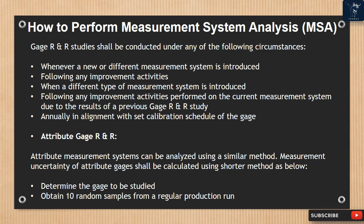Gauge R&R studies shall be conducted under any of the following circumstances: whenever a new or different measurement system is introduced; following any improvement activities; when a different type of measurement system is introduced; following any improvement activities performed on the current measurement system due to the results of a previous gauge R&R study; and annually in alignment with the set calibration schedule of the gauge.